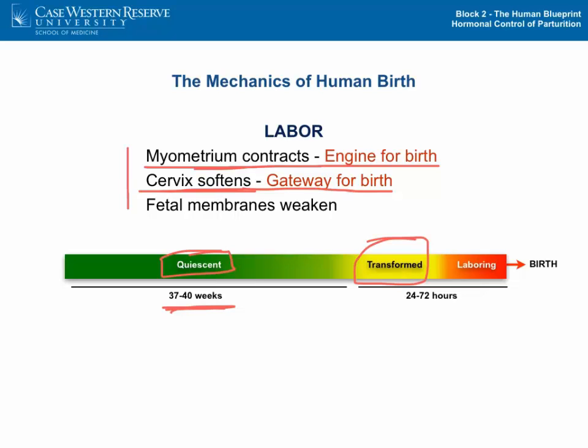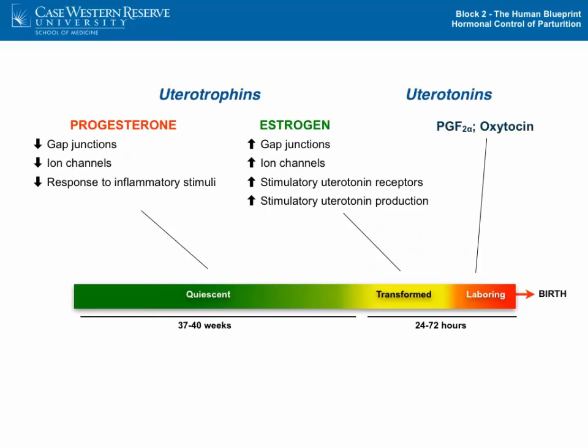These processes are the definition of labor: myometrium contraction, cervical softening, and membrane weakening — processes that usually happen during the last 24 to 72 hours of pregnancy and effectively cause the emptying of the uterus.